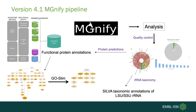I'll start by talking about version 4.1, because the beginning of the workflow has remained largely the same with the exception of updated tools and databases. When you submit your data into MGnify the first thing we do is perform quality control — removing short reads or long strings of ambiguous bases — and then using those QC reads we use Rfam models to extract the large subunit and small subunit ribosomal RNA.